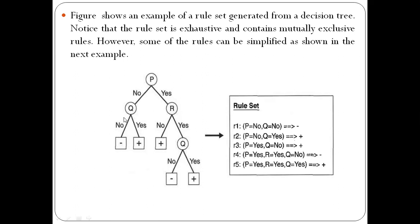The test conditions — such as 'P equals no and Q equals no' — are present on the LHS as the rule antecedent, while the RHS contains the class label, which corresponds to the leaf node and is the rule consequent. So the rule antecedent contains attribute-value pair test conditions, and the rule consequent contains the class label. In the indirect method, we generate rules using the decision tree rather than directly from data.